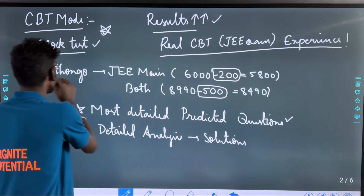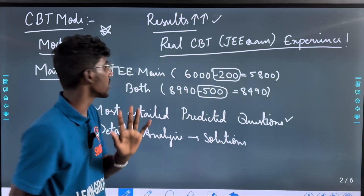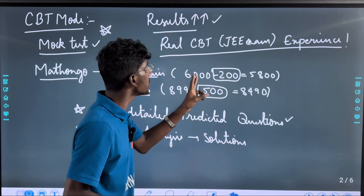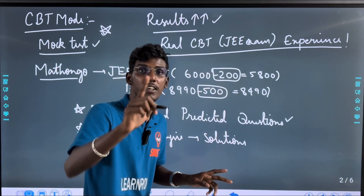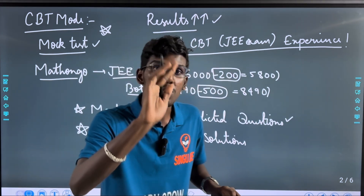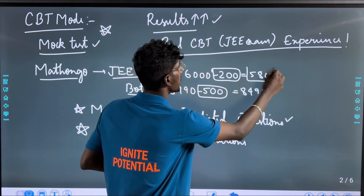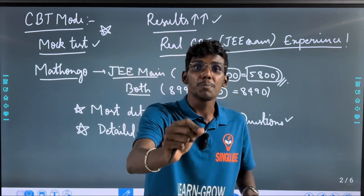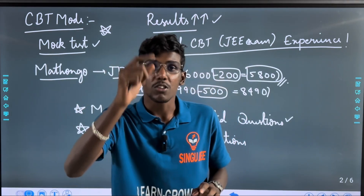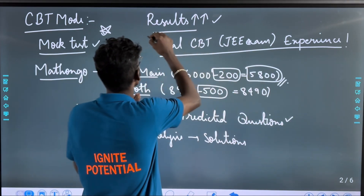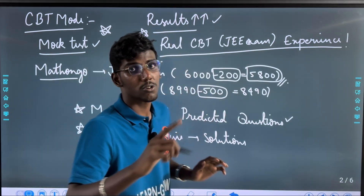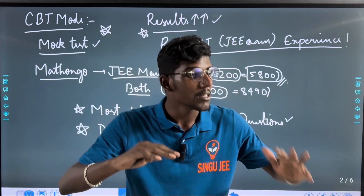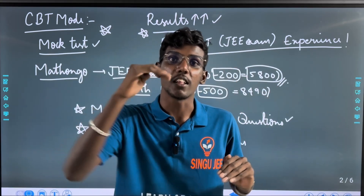In math, you can use JEE Main and JEE Main plus Advanced through Kandipa. You can use it for 6,000 rupees, with a 200 rupees discount using the coupon code link in the description, bringing it to 5,800 rupees. The results are very high — in 2024-2025, the percentile and cut-off decreased at that level.